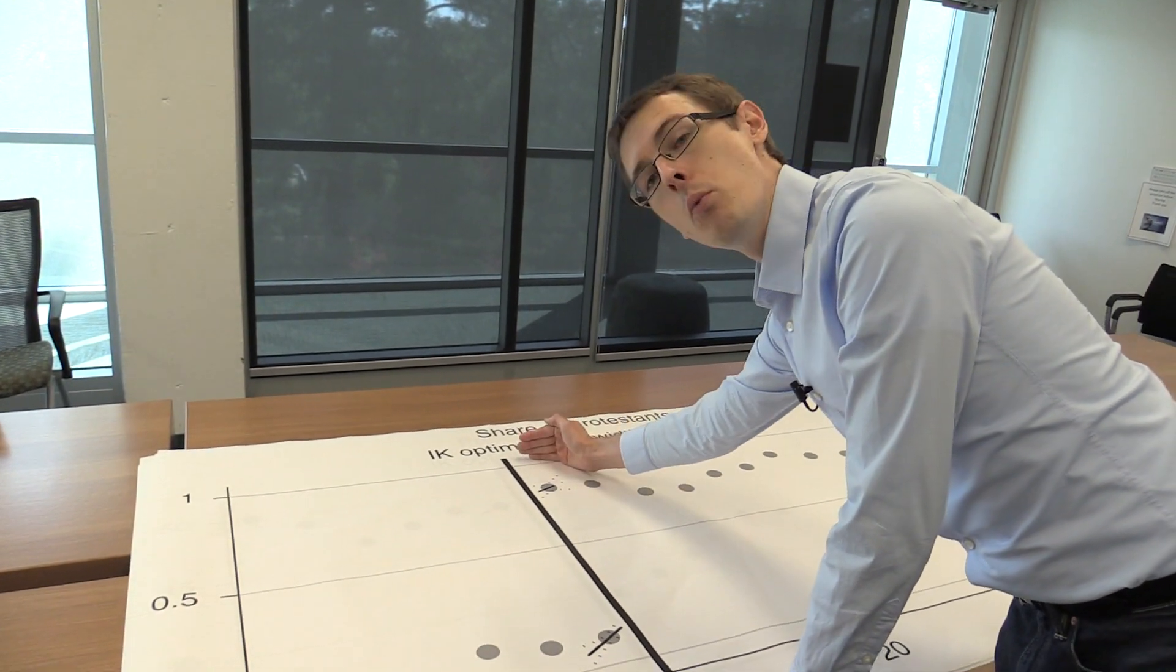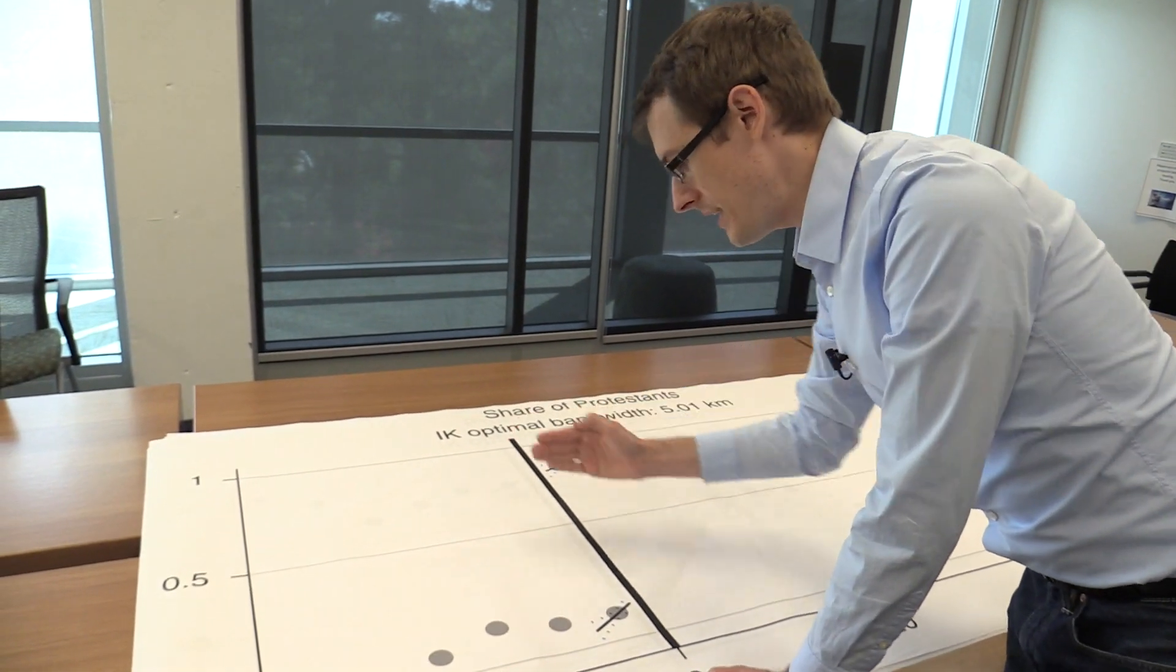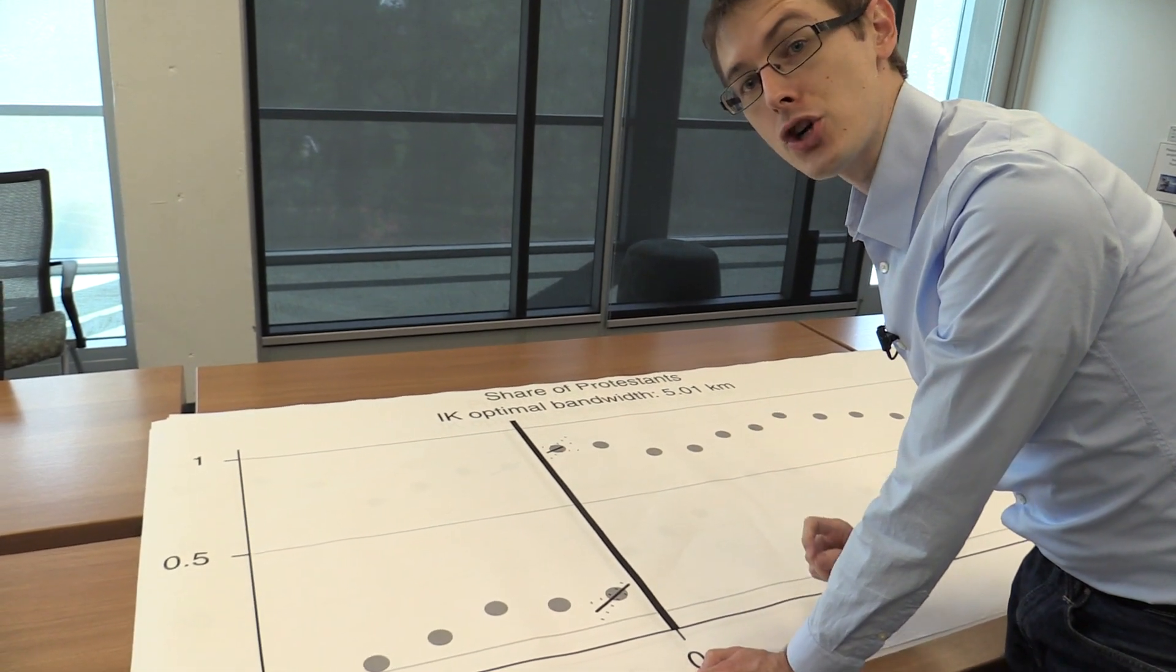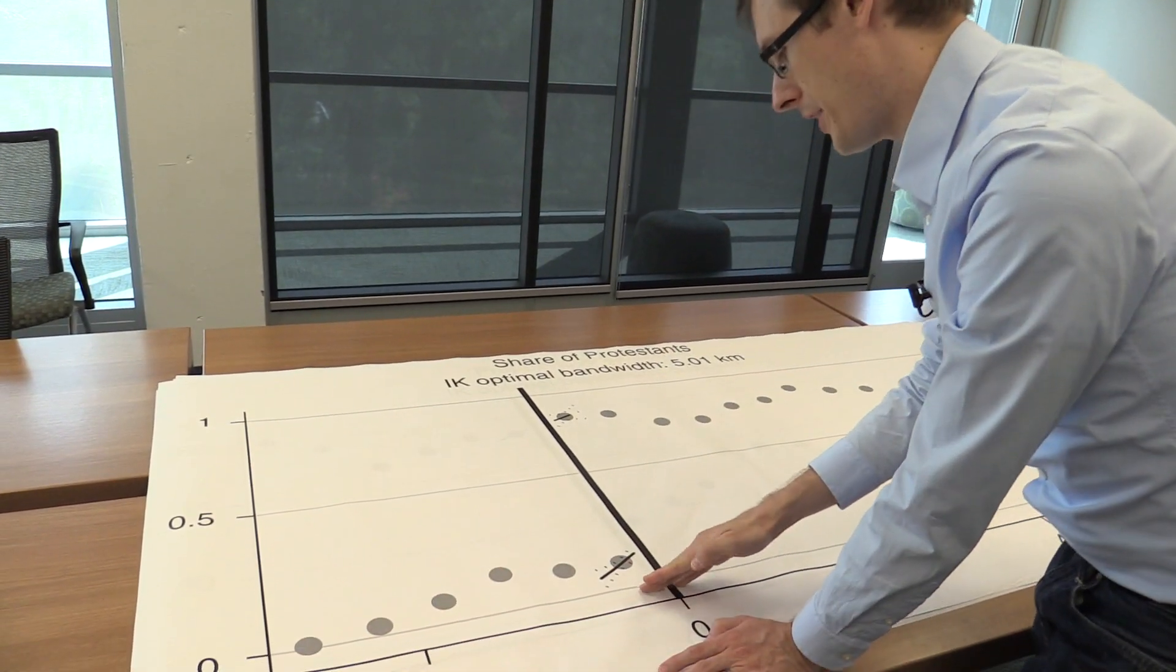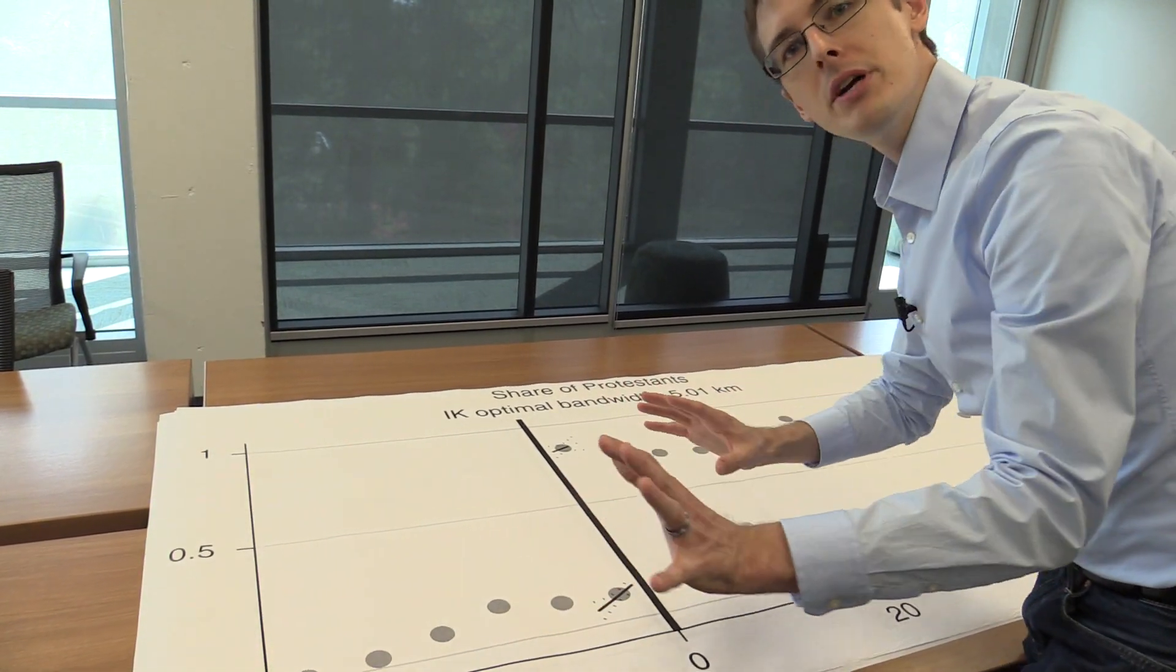It doesn't go up to one, so that's why we know we have a fuzzy RDD design. Because this is not one, and this right here is not zero. That's what you would see if you had a sharp RDD. It would be zero, and then right as soon as you cross the border, it's one. Here it's not quite that, but it's pretty close.